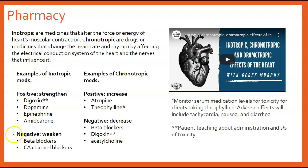Negative inotropes weaken the strength and force of the heart's contraction — those are beta blockers and calcium channel blockers. Chronotropic medications change the heart rate and rhythm by affecting the electrical conduction of the heart and the nerves that influence it. Positive chronotropes that increase the rate include theophylline and atropine. Negative chronotropes that decrease or slow the rate include beta blockers, digoxin, and acetylcholine.